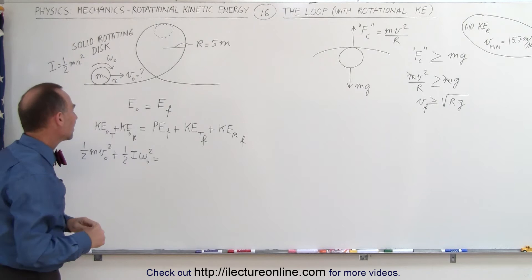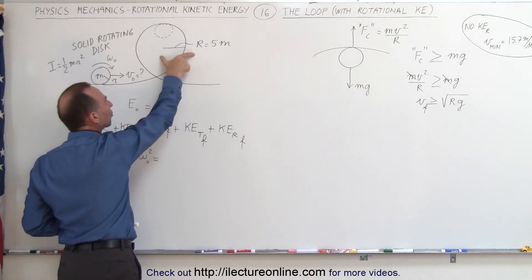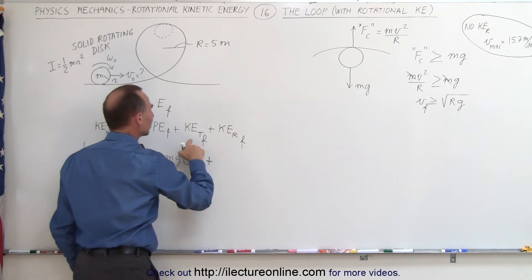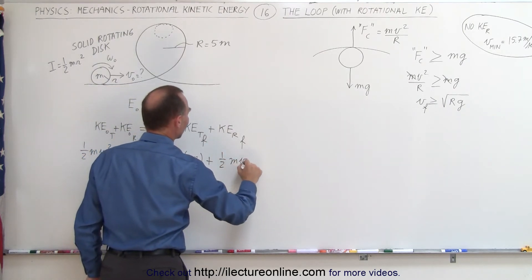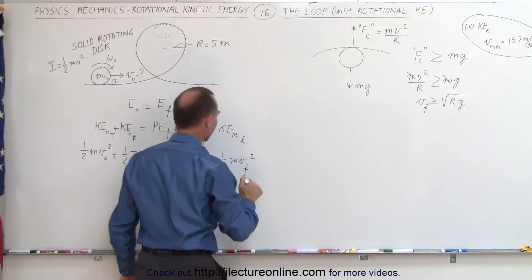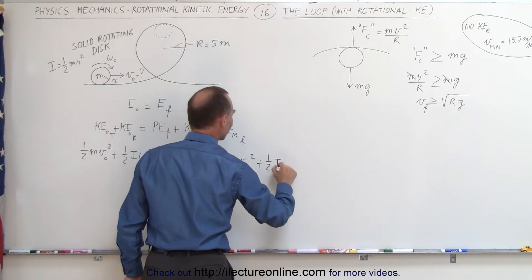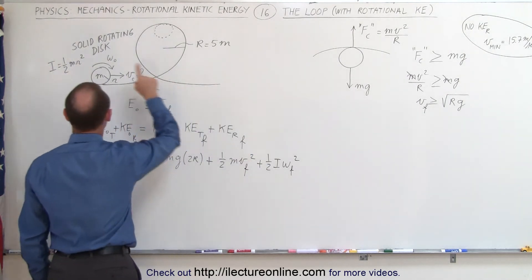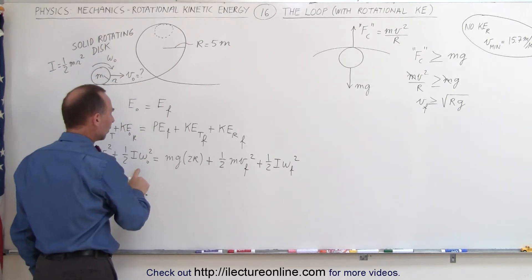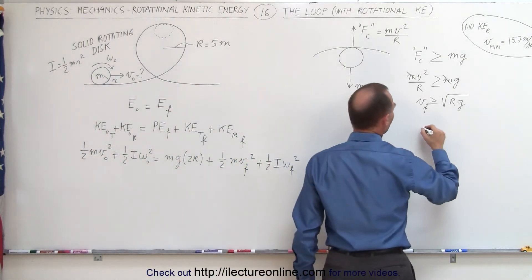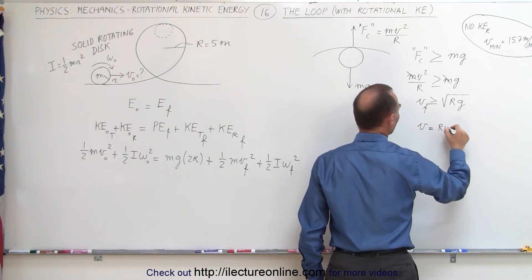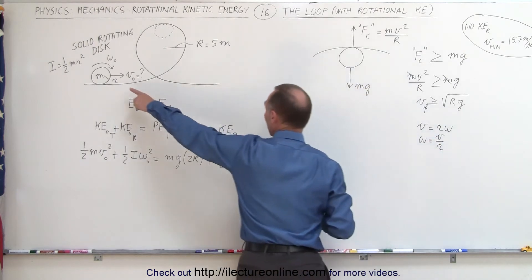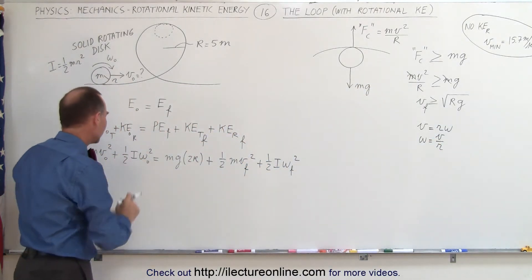The potential energy final corresponds to a height of twice the radius of the loop, so we get mg times 2R, plus the translational kinetic energy at the top, which is one-half m v final squared, plus one-half times the moment of inertia times omega final squared. We also know that tangential velocity equals r times omega, which means omega equals v over r — using small r for the radius of the disk. Let's plug that into our equation.